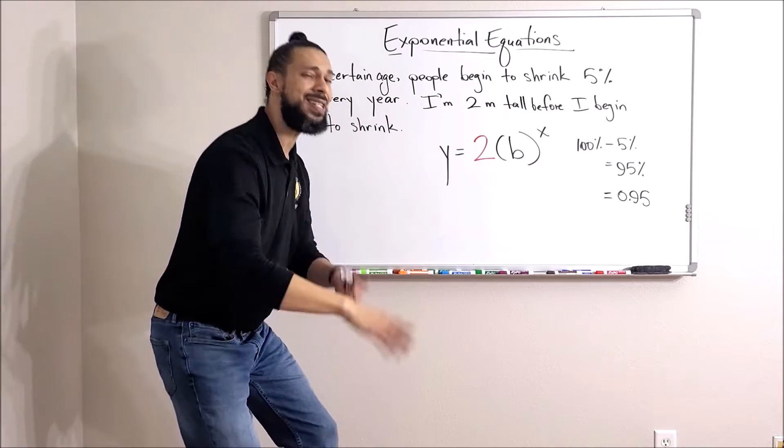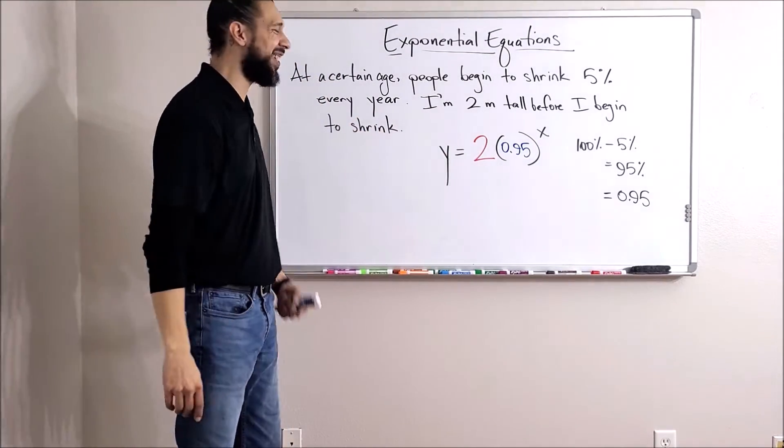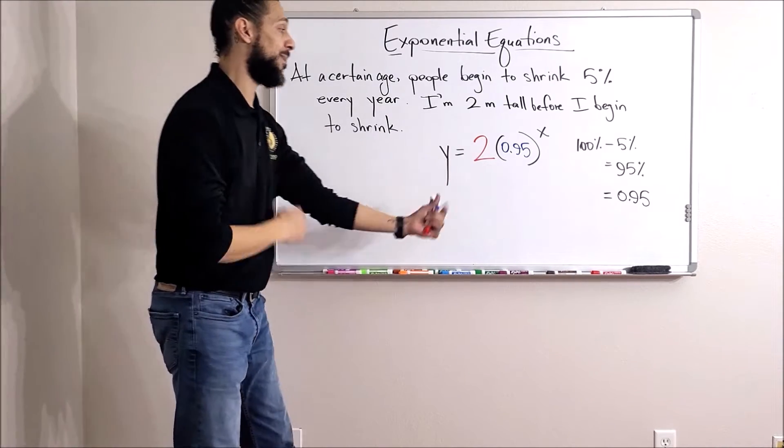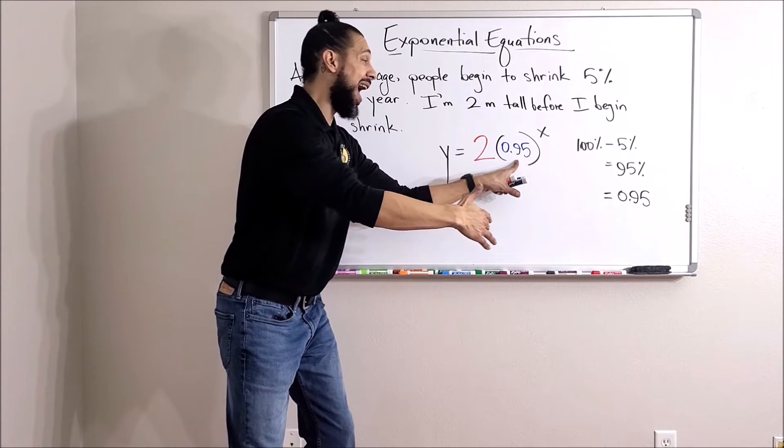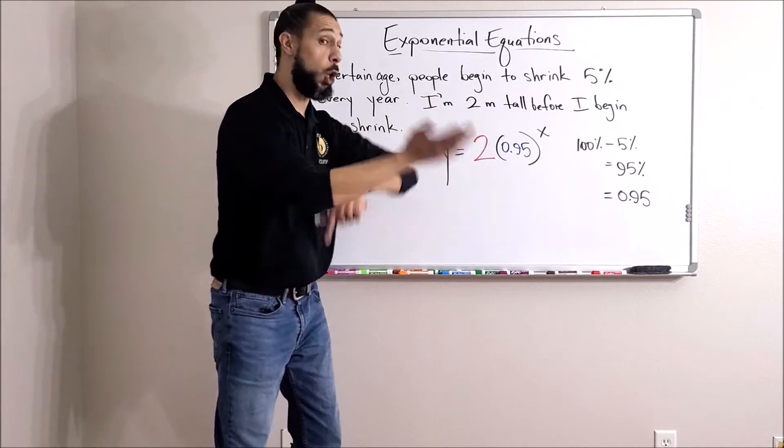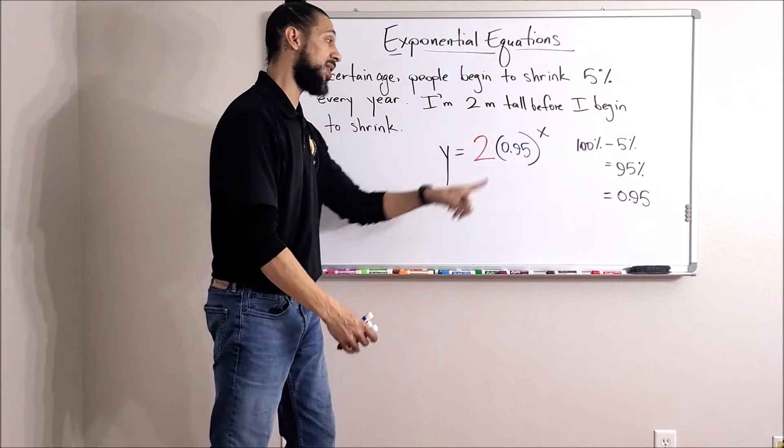Let's refresh, let's review real quick what this means. I started out at two meters tall and then every year I'm 95% of that. Yeah, five percent goes away, so 100 minus five percent is 95, so that's how much I have remaining. That's what I'm going to multiply by to find out how much is left.